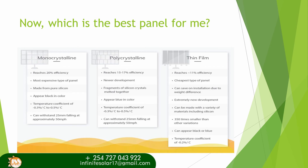Lastly, the thin film solar panel can reach an efficiency of about 11 percent. It is the cheapest type of solar panel in the market, which can save on installation due to the weight difference. It is an extremely new development and can be made from a variety of materials including silicon. It is very small in size and appears black or blue in color. It has a temperature coefficient of about negative 0.2 percent.